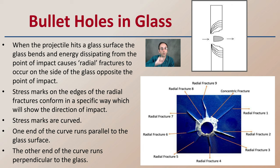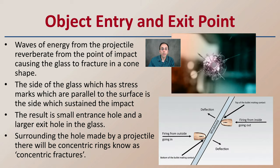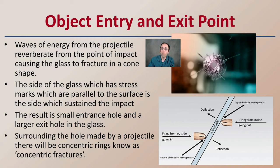Object entry and exit points can be very important when determining whether a bullet came into or out of a car. Waves of energy from the projectile reverberate from the point of impact, causing the glass to fracture in a cone shape. The side of glass that has stress marks parallel to the surface is the side that sustained the initial impact. The result is a small entrance hole and a larger exit hole in the glass. Surrounding the hole made by the projectile there will be concentric rings — the concentric fracture — which helps determine bullet direction.